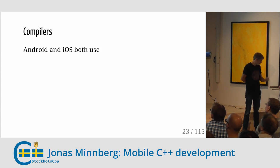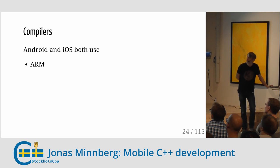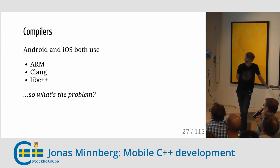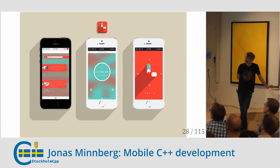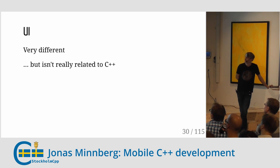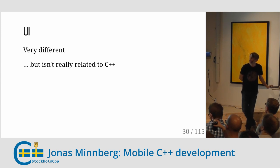So do we have any other problems? We can use CMake, but what about the compilers? Android and iOS both use Clang these days. Android used to have GCC as an option, but they've deprecated that. They both use libc++. So what's the problem? It should be easy.